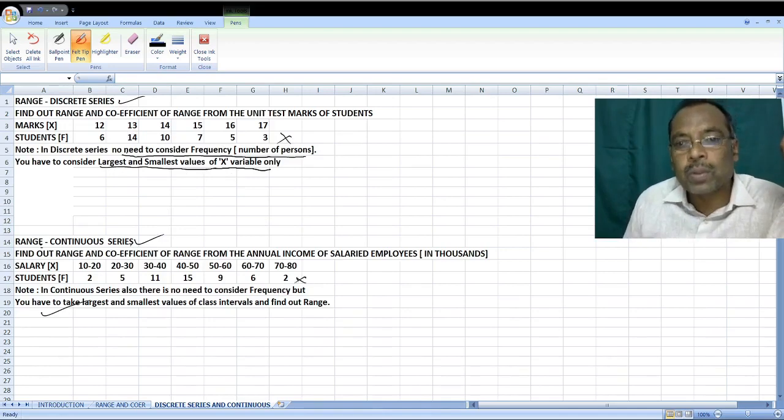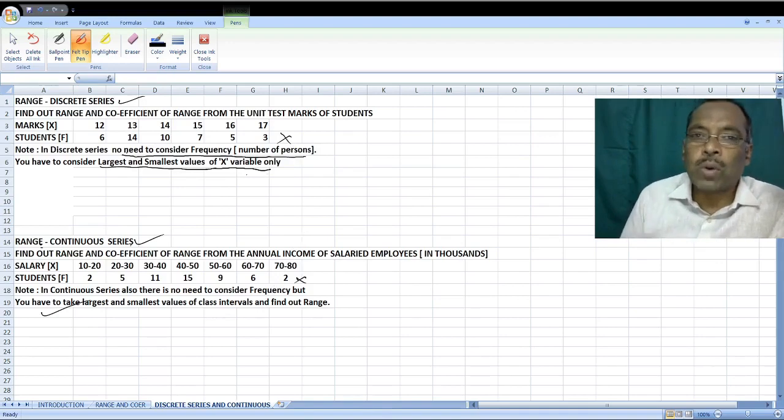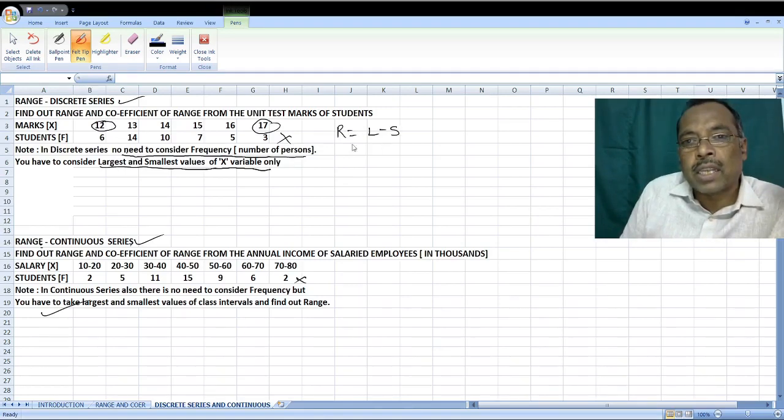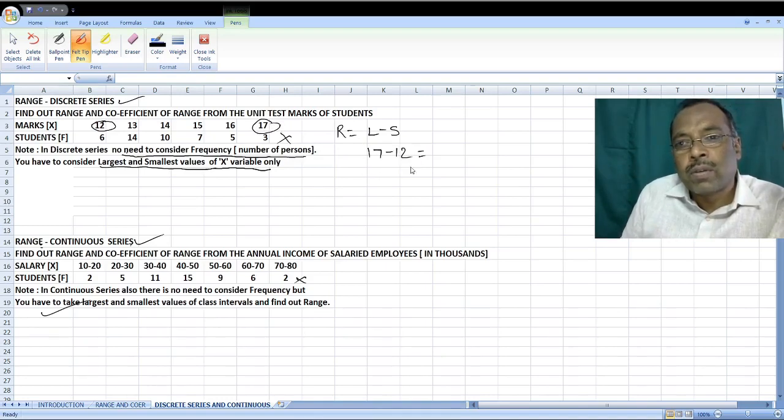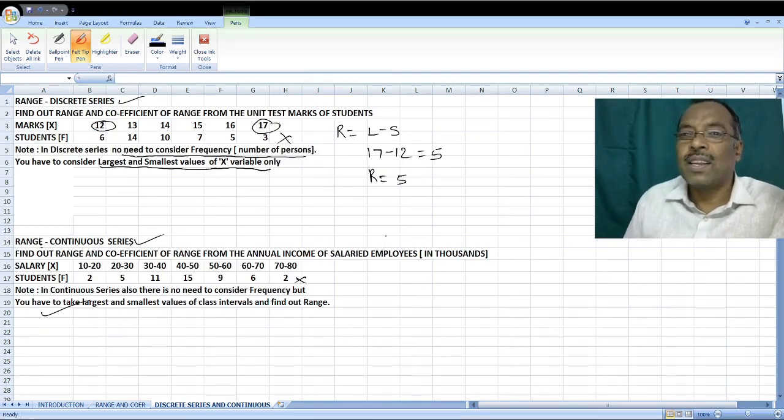This is the important thing. What you have to consider? You have to consider Largest value and Smallest value. You know the formula for Range: Range is equal to L minus S. So, in this problem, 17 minus 12 is equal to 5. Range is equal to 5. That's all.